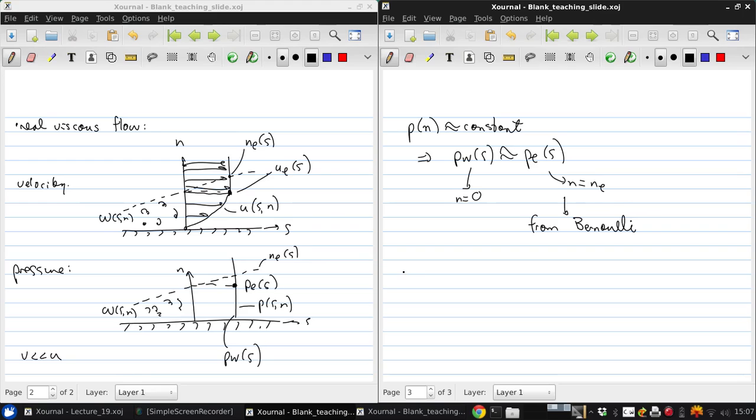So that P W of S, which is approximately P E of S, is equal to P infinity plus one-half rho V infinity squared minus one-half rho V infinity squared.